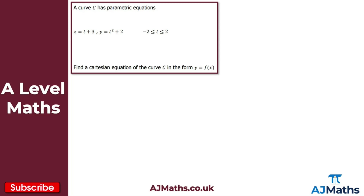Like we said in the introduction, to find the Cartesian equation for curve C defined parametrically, we need to use substitution. Since we want the curve in the form y equals f of x, it makes sense to take the equation for x, rearrange it to make t the subject, and then substitute t into the equation for y. We begin with x equals t plus 3.